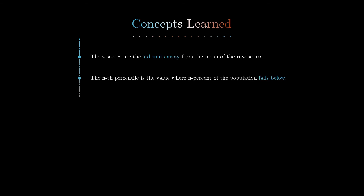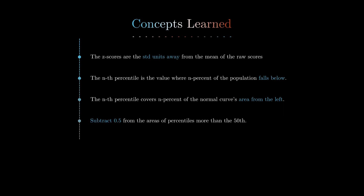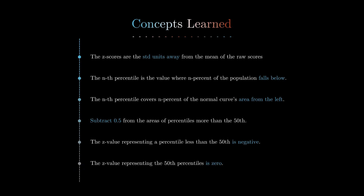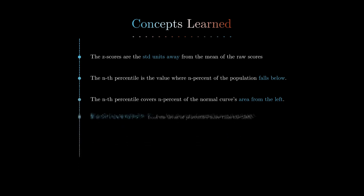In conclusion, we can recall the concepts learned: z-scores are standard units away from the mean; the nth percentile is the value where n percent of the population falls below; the nth percentile covers n percent of the normal curve's area starting from negative infinity; subtracting 0.5 is necessary for percentiles greater than the 50th; z-values for percentiles less than 50 are always negative; and the z-value representing the 50th percentile is zero.